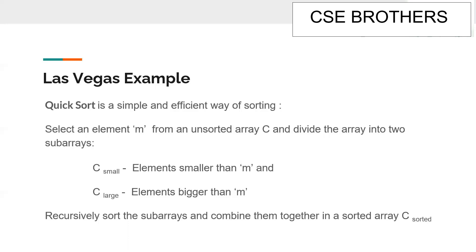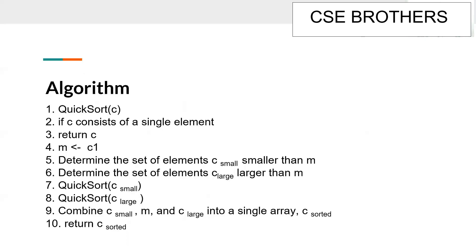In short, we place the pivot element at its correct position in the final sorted array. The array is then divided into two subarrays — one on the left side of the pivot and one on the right side — and these two subarrays are recursively sorted following the same procedure, then combined to form a fully sorted array.